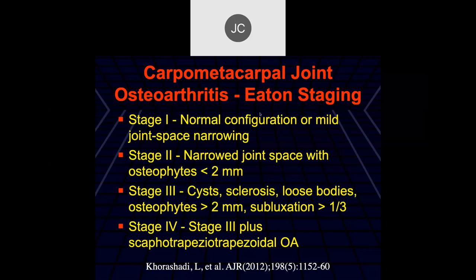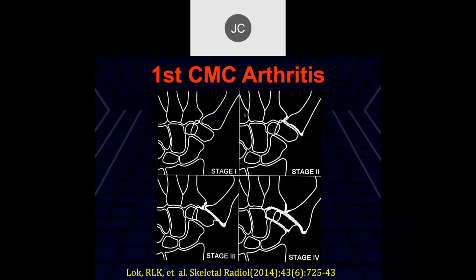Eaton stage one: normal configuration or mild joint space narrowing on plain films. Stage two: narrowed joint space with osteophytes, joint space less than two millimeters. Stage three: cysts, sclerosis, loose bodies, osteophytes, with subluxation less than one-third of the base diameter. Stage four: stage three plus degenerative change of the scapho-trapezio-trapezoidal joint.